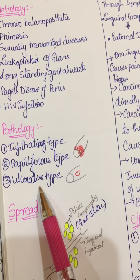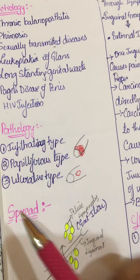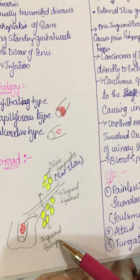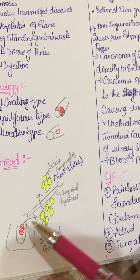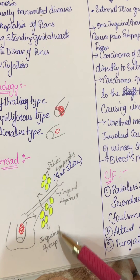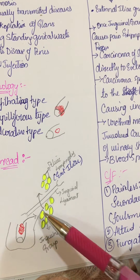Pathology: there are three types - infiltrating type, papilliform type, and verrucous and ulcerative type.